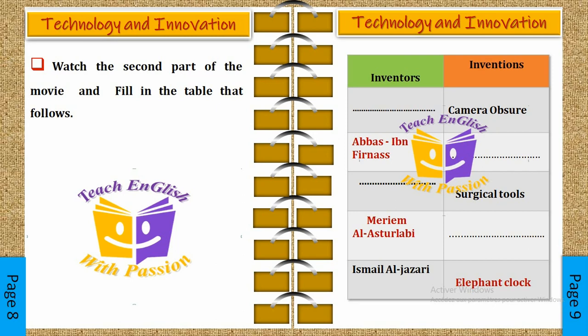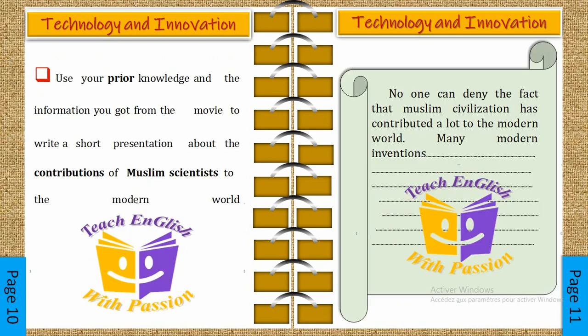In the second activity, learners watch the second part of the movie and complete the table with names of inventors and their inventions. At the end of this phase, the teacher has a brief discussion with learners about their personal impressions of the movie, getting them to answer the questions previously raised about whether Muslim scientists had any remarkable contributions to the field of science and technology.